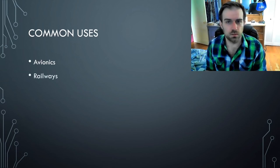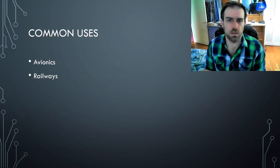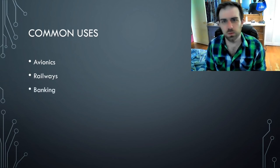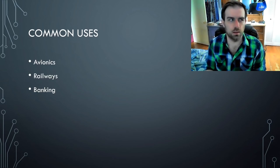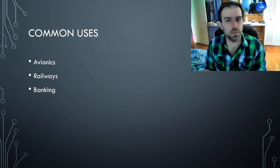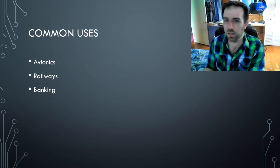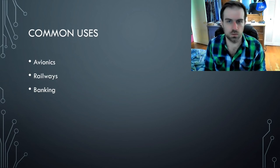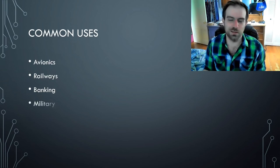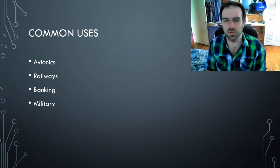Also railways — this can be either standard trains or subways. One big example of this is the Paris Metro. Banking is another area where we don't really have a ton of information. Compiler vendors like AdaCore and PTC know they're selling commercially supported compilers to banks, but they're not super open about which ones. And obviously the military — anybody who makes things for the military is going to wind up using Ada at some point.